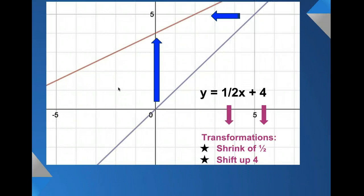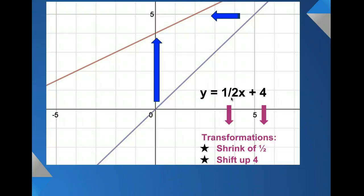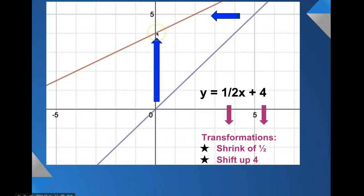This one has a slope of 1 half and a y-intercept of 4. Identifying those as transformations: we say it has a shrink of 1 half because it's less than 1, meaning the graph becomes less steep. The brown graph is less steep than our parent function. The b-value of 4 means the whole graph shifts up from 0, 0 to 4. So we have two transformations in this linear function.